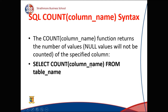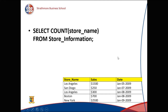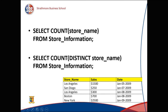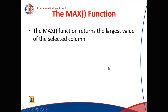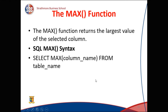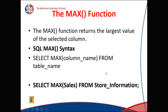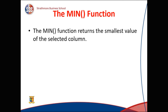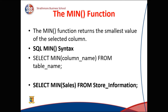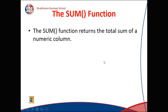SELECT COUNT(store_name) FROM store_information returns 5 — it counts all five records. SELECT COUNT(DISTINCT store_name) FROM store_information returns 4 because of the DISTINCT keyword. The MAX function returns the largest value — SELECT MAX(sales) FROM store_information returns 2500. The MIN function returns the smallest value — SELECT MIN(sales) FROM store_information returns 250.